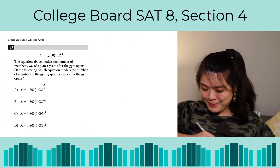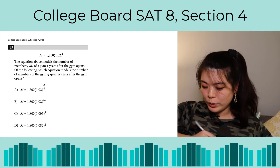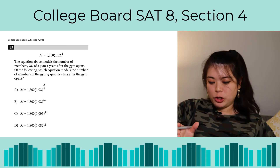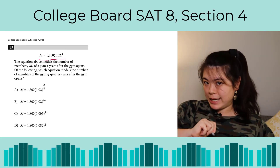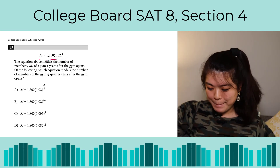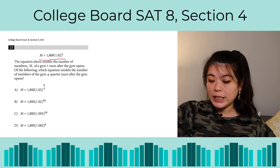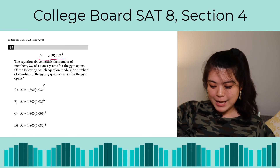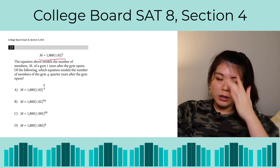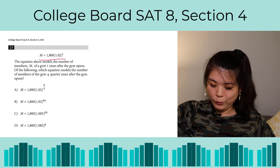Last question, number 23. The equation models the number of members M of a gym T years after the gym opens. Which equation models the number of members Q quarter-years after the gym opens? Let's interpret: this is a standard exponential equation. When the gym opens, we start with 1800 members, and each year we increase by 2%. This is about converting T into Q. A quarter is one fourth of a year, so after one quarter we should only be raising the 2% growth to the power of one fourth. So the answer is A.